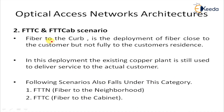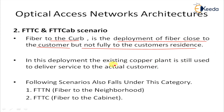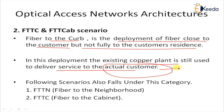Next is the FTTC or FTC cab scenario — Fiber to the Curb. This is the deployment of fiber close to the customer but not fully to the customer's residence. It is provided to the street or a nearby area of the society, with the remaining network deploying copper — telephone line, PSTN network, or twisted pair cable — to deliver service to the actual customer location. This is also known as Fiber to the Neighborhood.